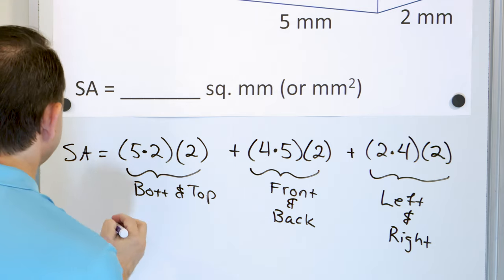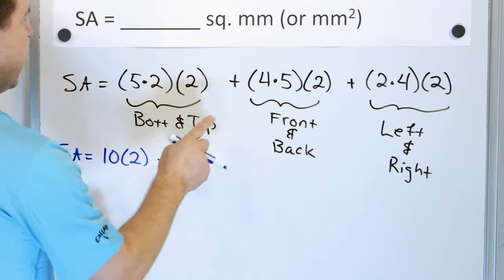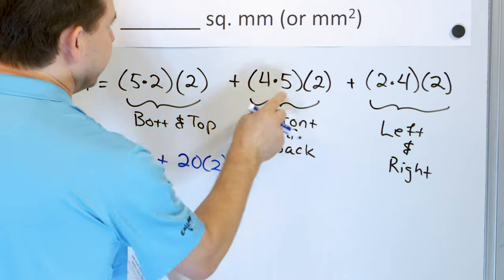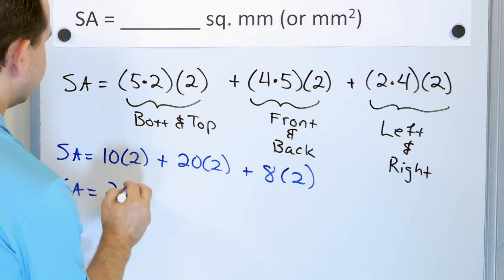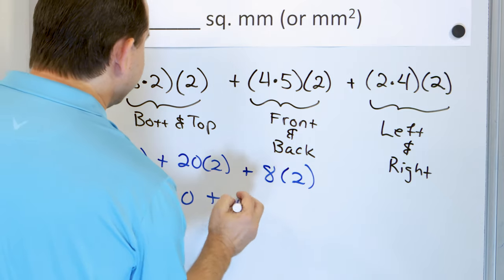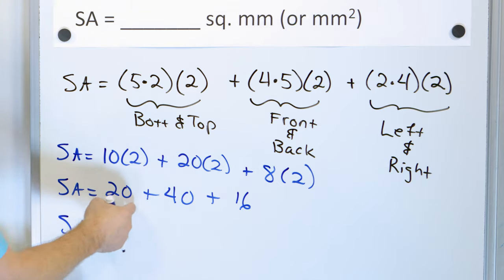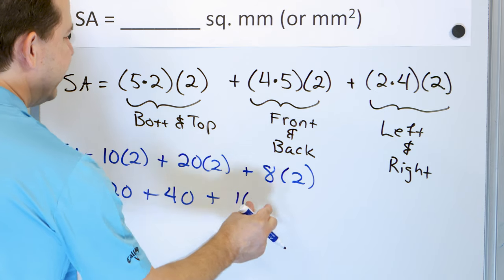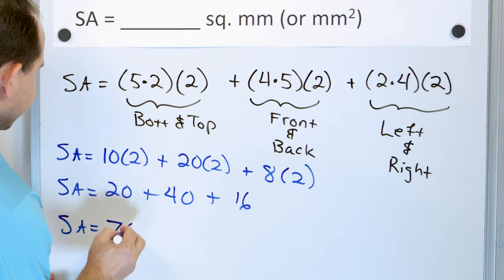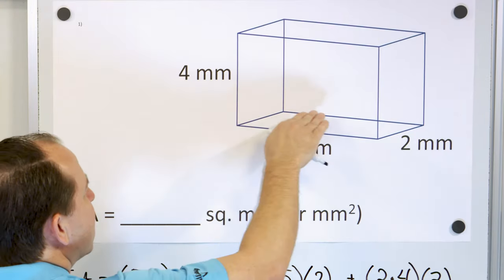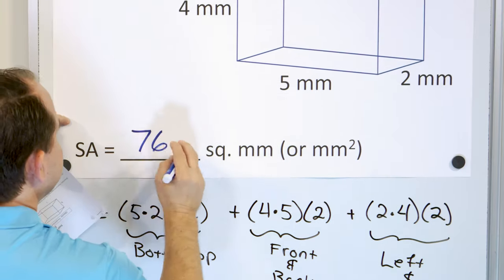Now we can calculate. The surface area equals: 5×2 = 10, times two is 20. Then 4×5 = 20, times two is 40. Then 2×4 = 8, times two is 16. Now 20 plus 40 is 60, and then 16 more gives us 76. So the surface area is 76 square millimeters.